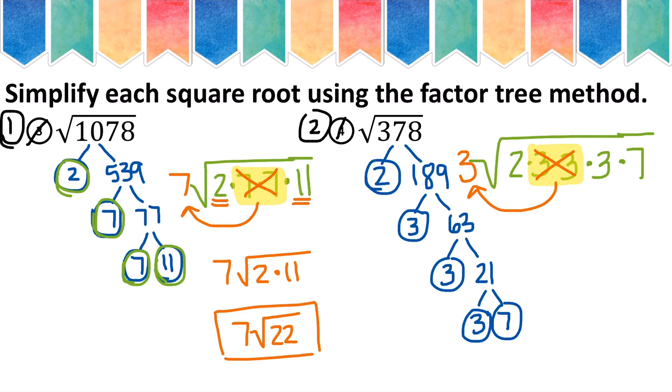So I'm left with the 2, the 3, and the 7 do not have a pair. So I will bring them down, 2 times 3 times 7. So the front 3 will come down, and the rest I will type into my calculator. 2 times 3 times 7 makes 42. And my final answer is 3 square roots of 42.